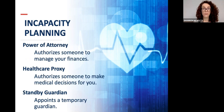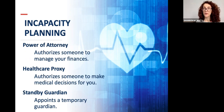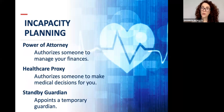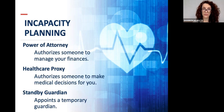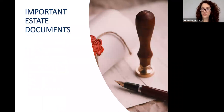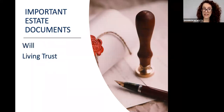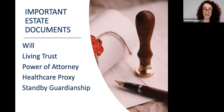We address incapacity through a power of attorney, which authorizes someone to manage your finances. Another document is a healthcare proxy, authorizing someone to make medical decisions for you if you can't make them yourself. Finally, a standby guardian: the guardian in your will only goes into effect after probate and court appointment, but a standby guardian can be appointed in advance to serve as a temporary guardian if you became incapacitated.